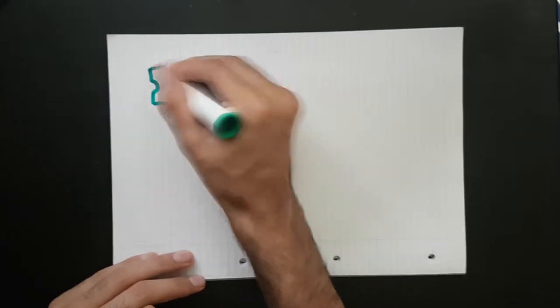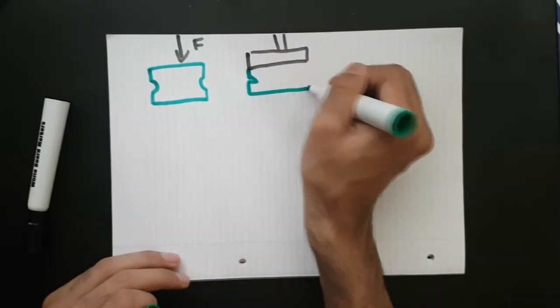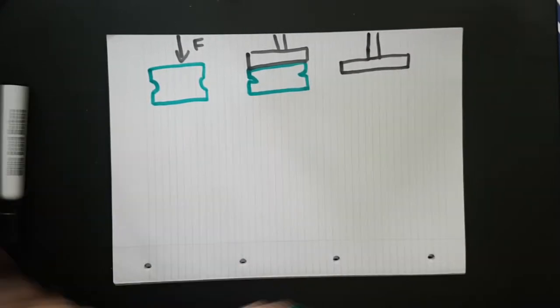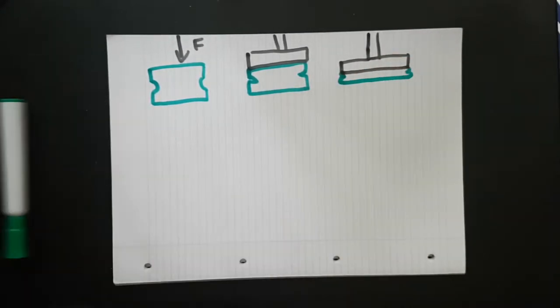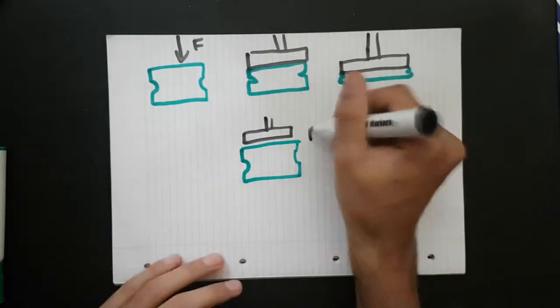Everything changes shape slightly when a force is applied. The material is only considered to be behaving elastically if the original shape is returned to when the force is removed. Here we can see how the sponge is squished when compressed by the plunger, but when the plunger is removed it returns to its original shape as if nothing had happened.